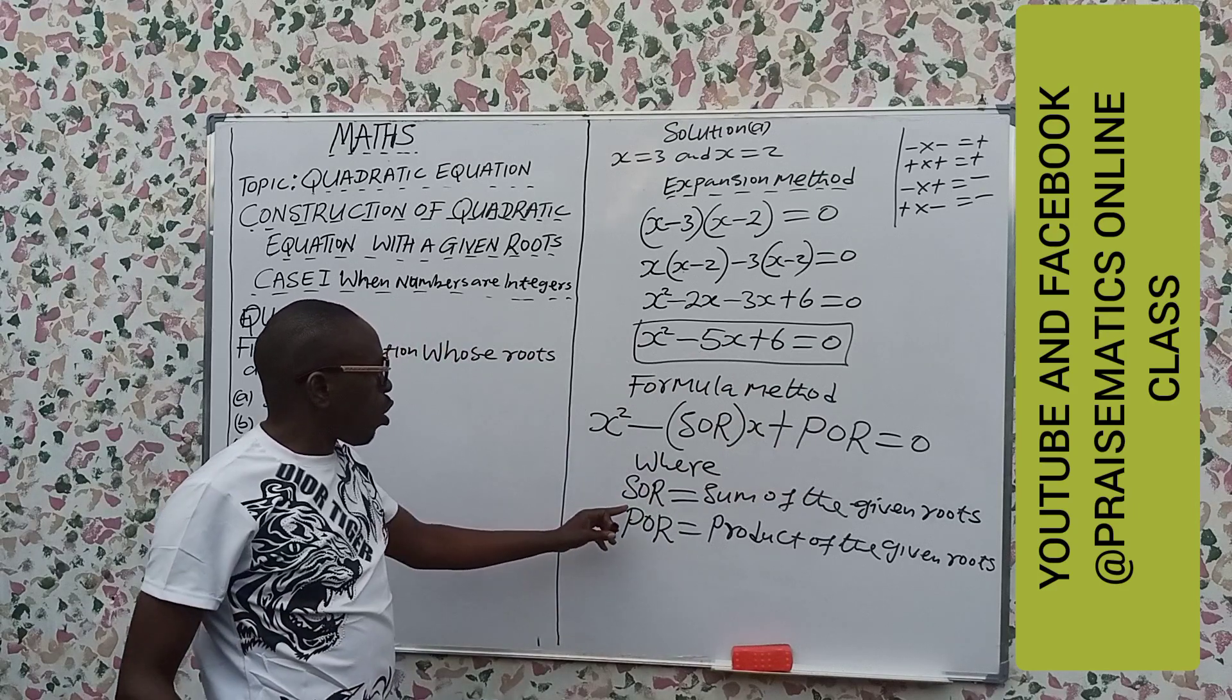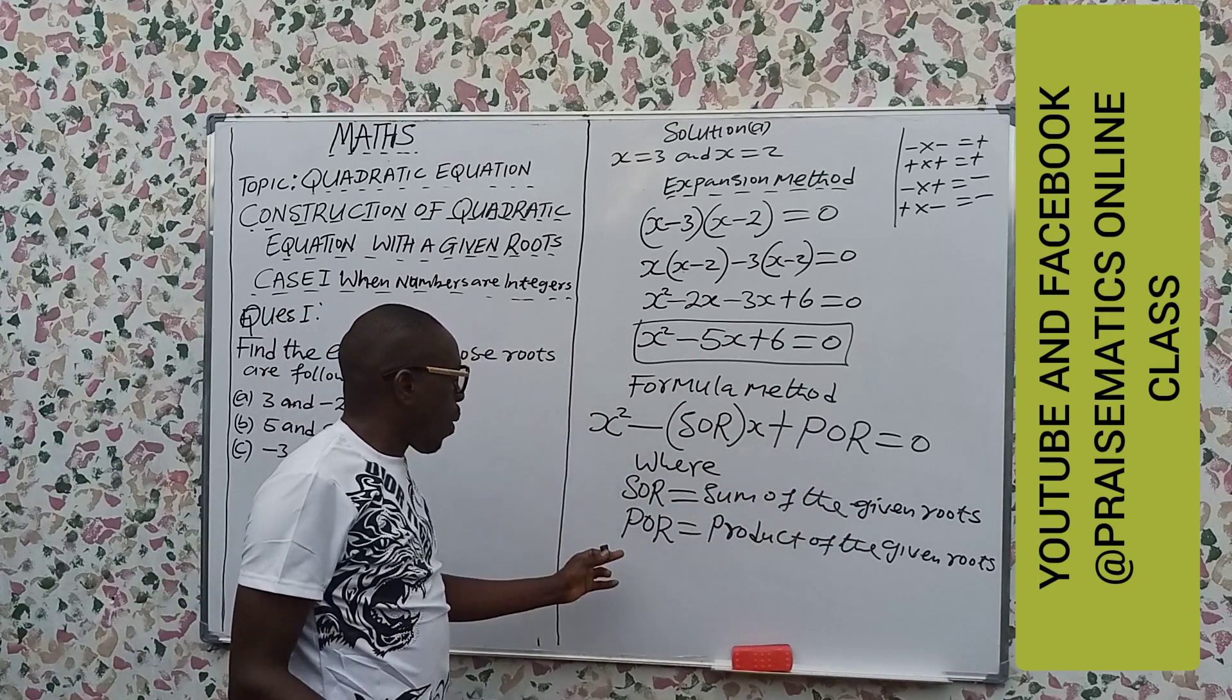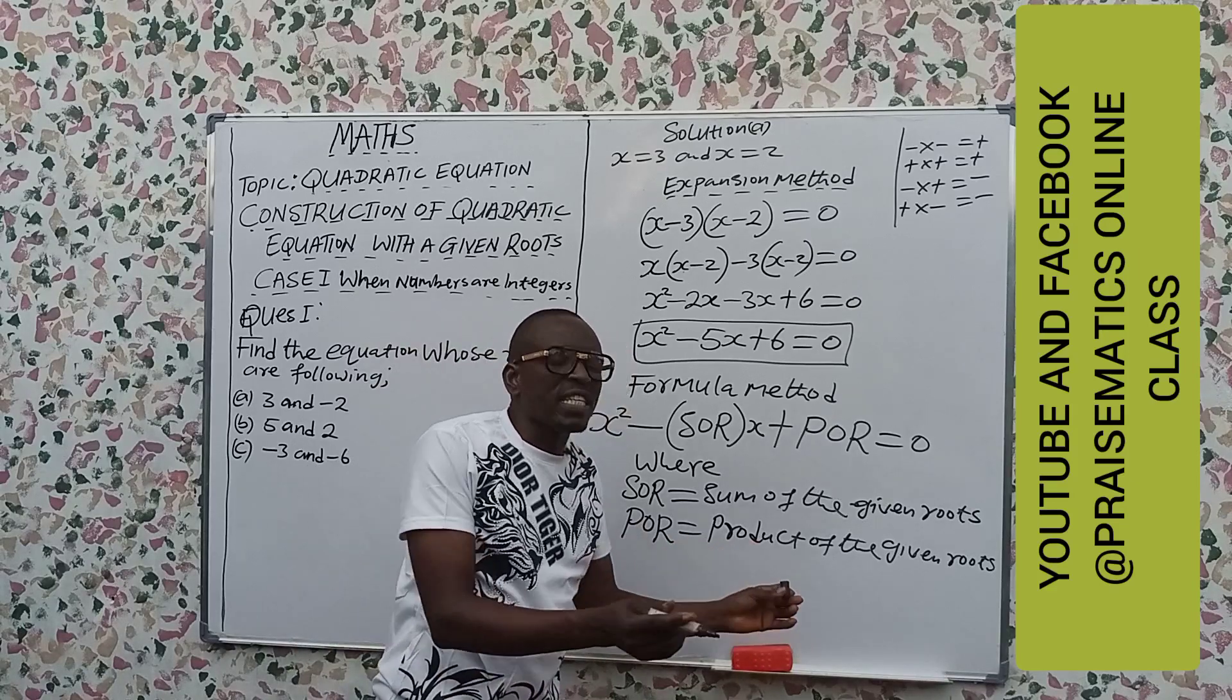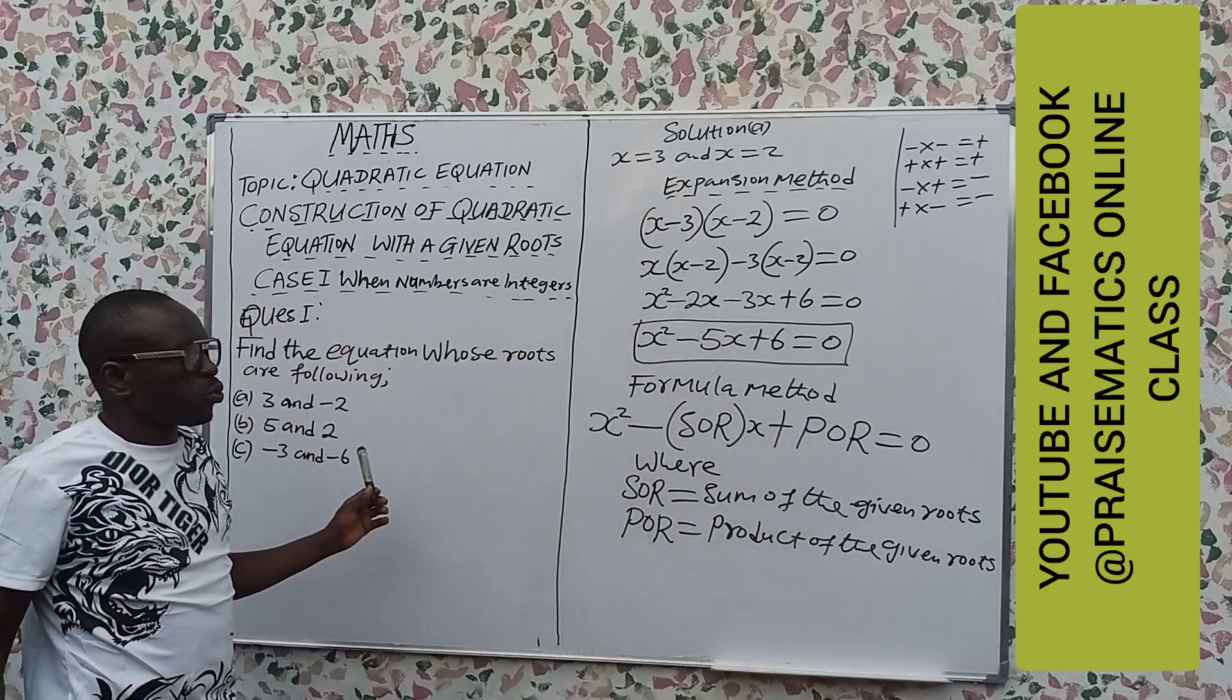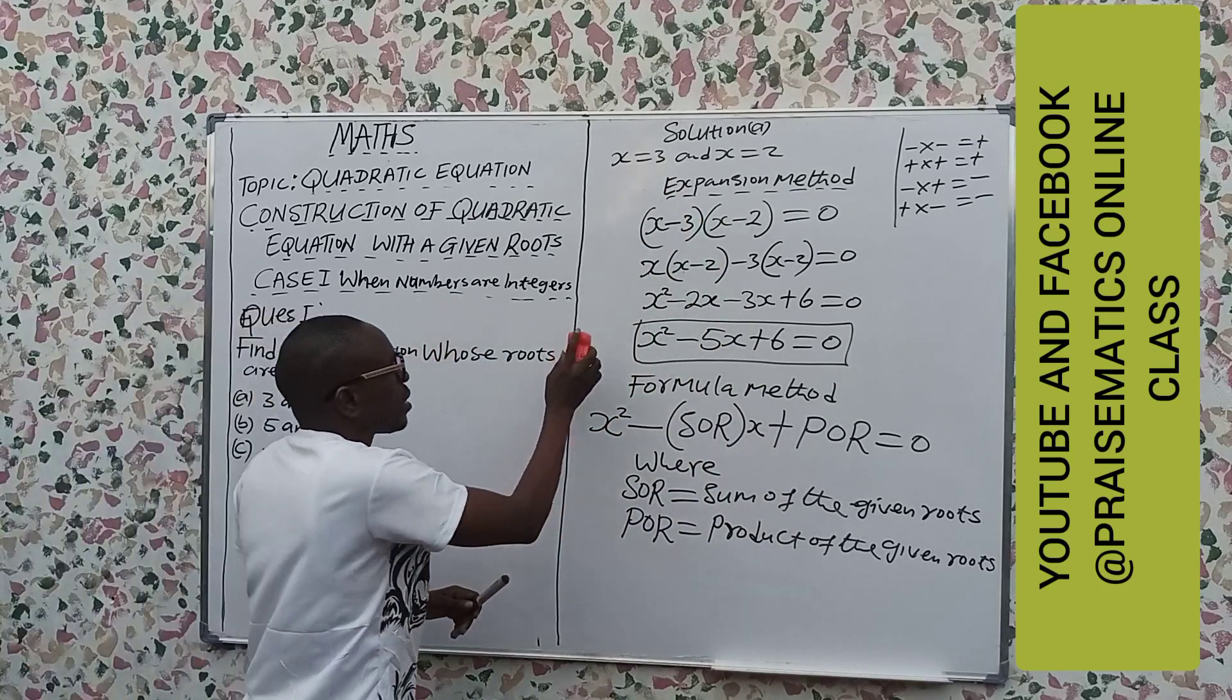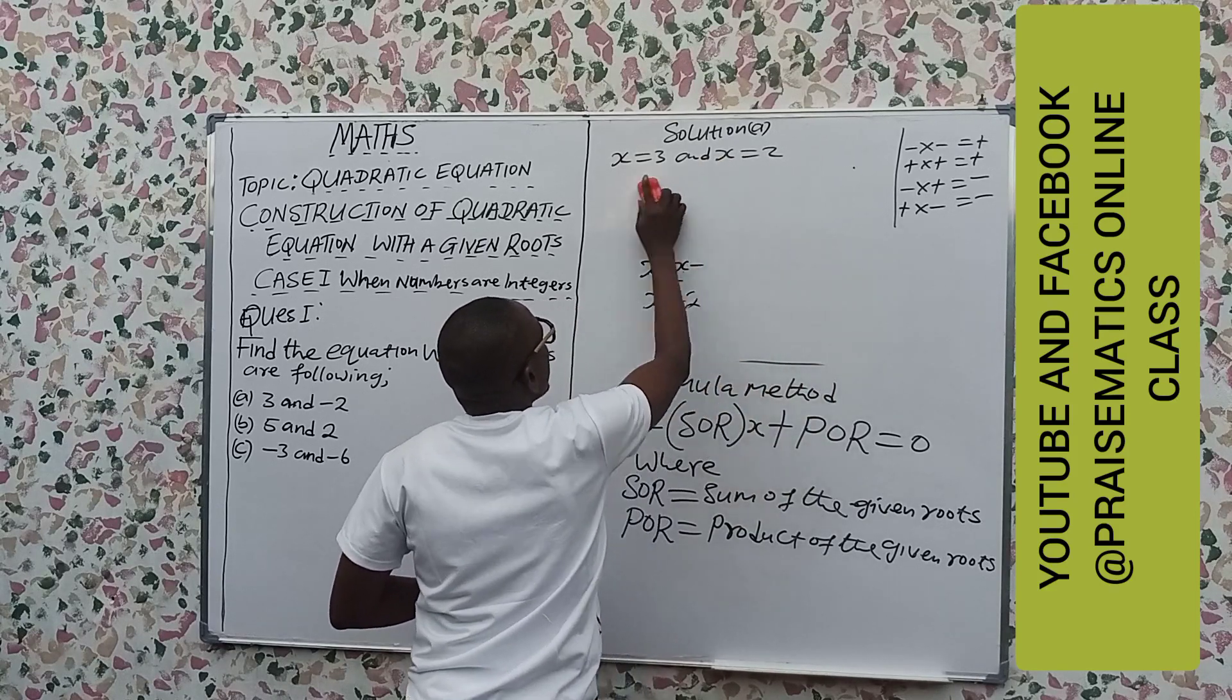So sum means add the given roots together. Product means multiply the given roots together. So that is what we are going to do. So let's continue it here. I hope you are okay here. So let me wipe it out and continue the second method solution there.